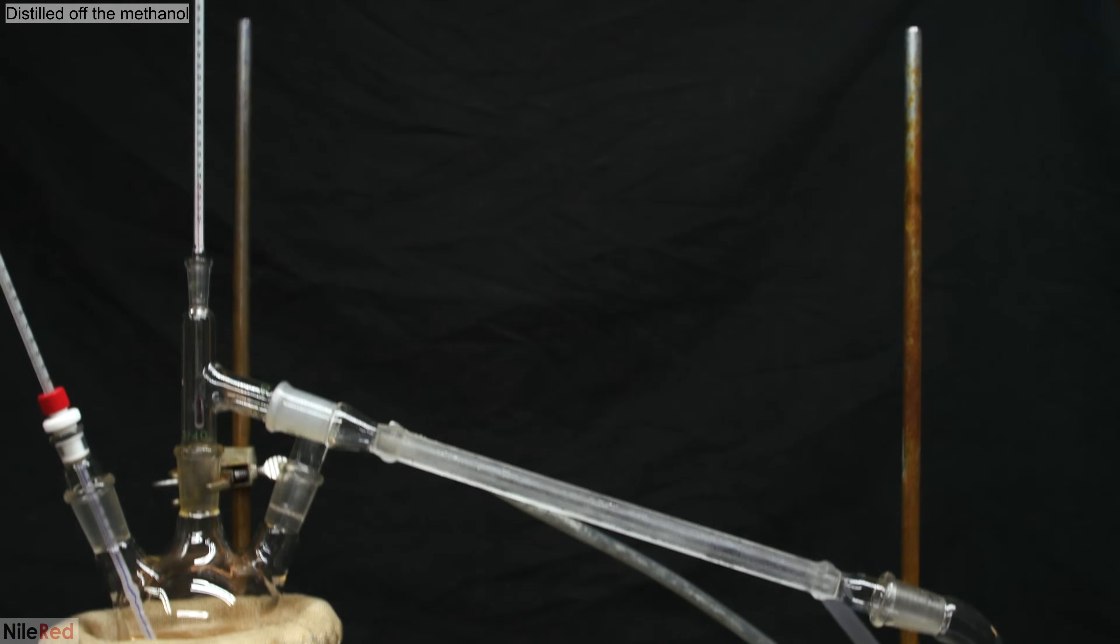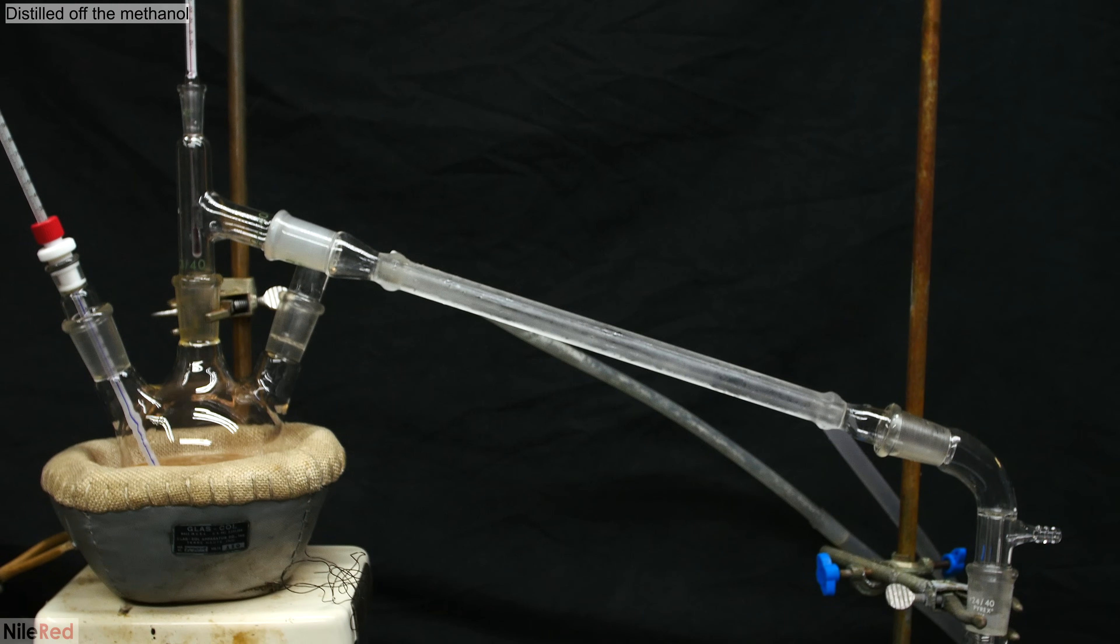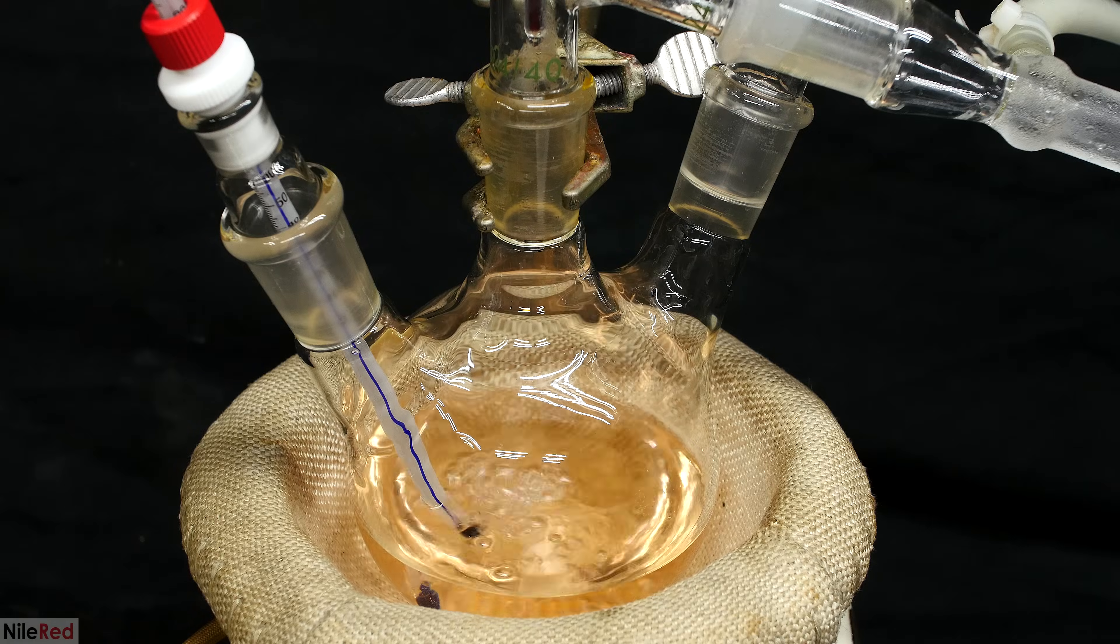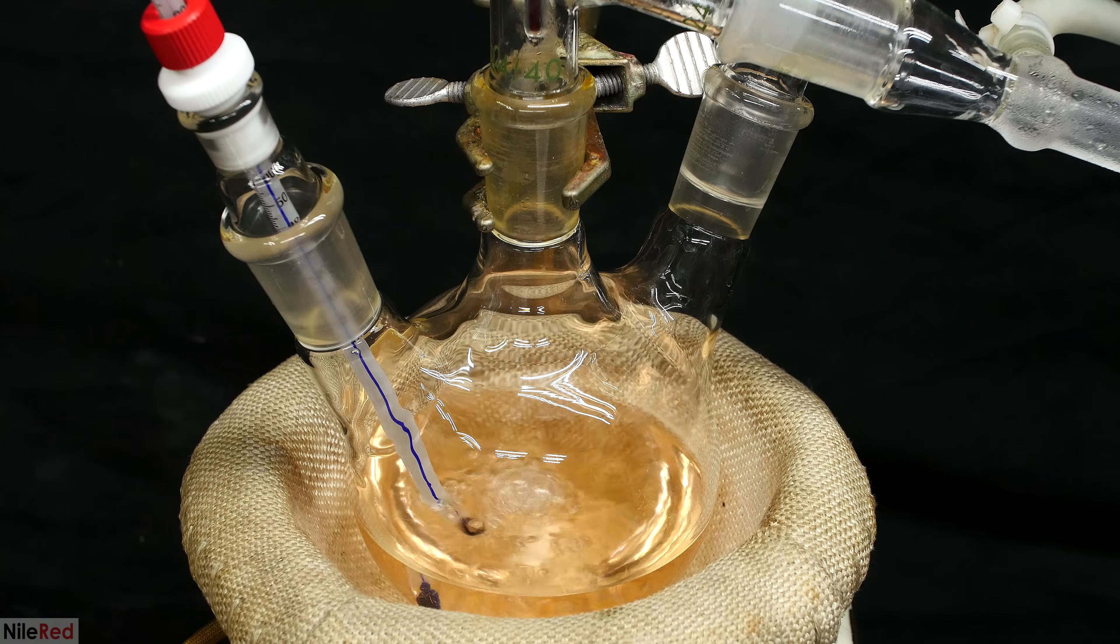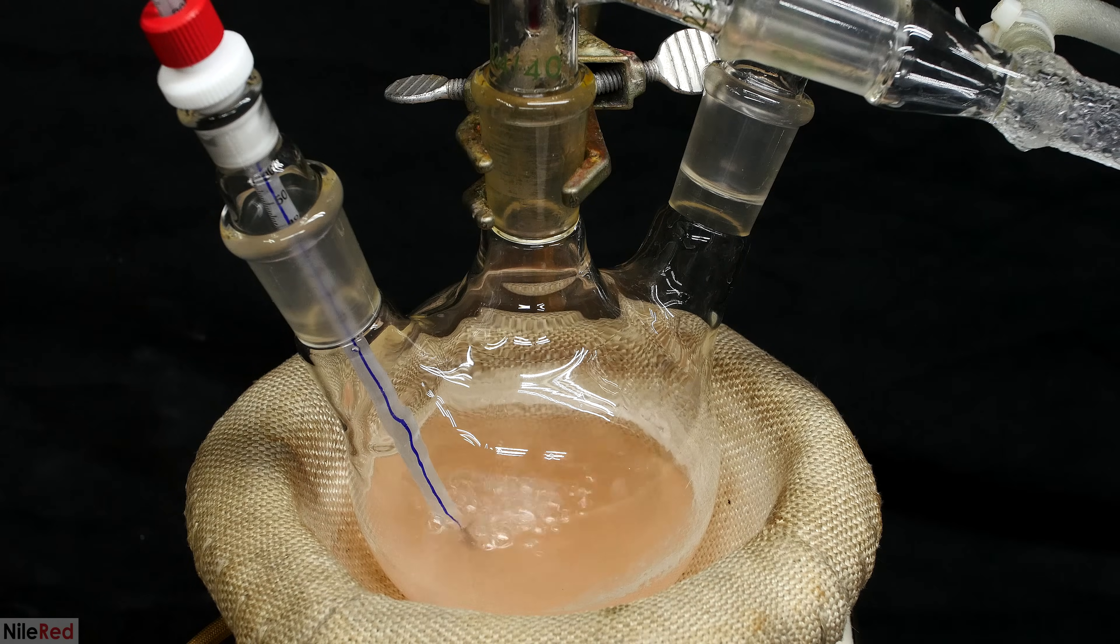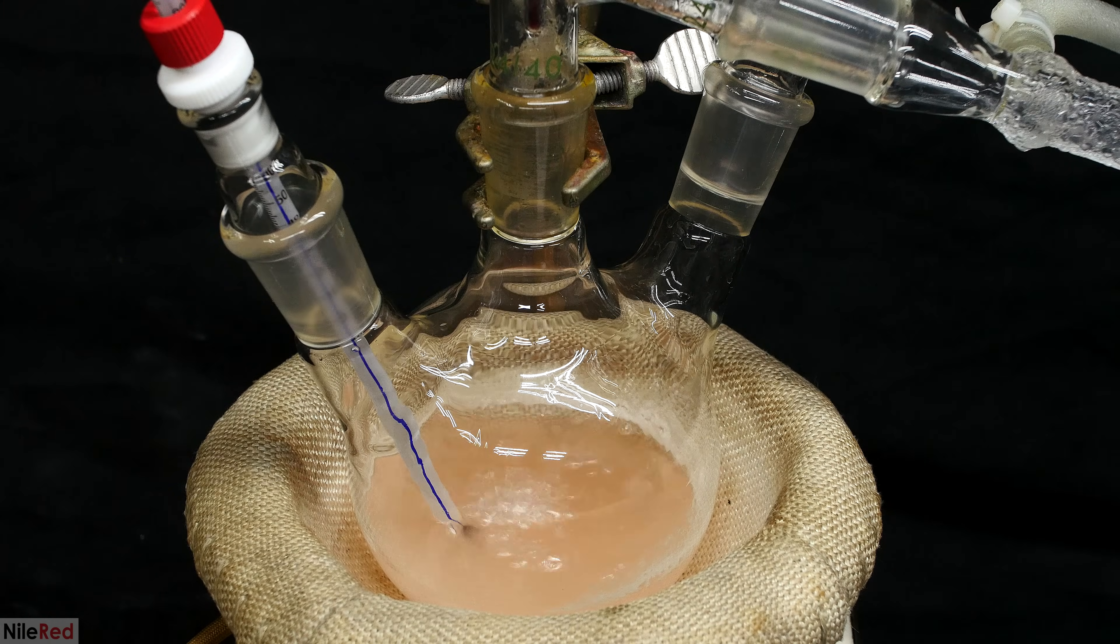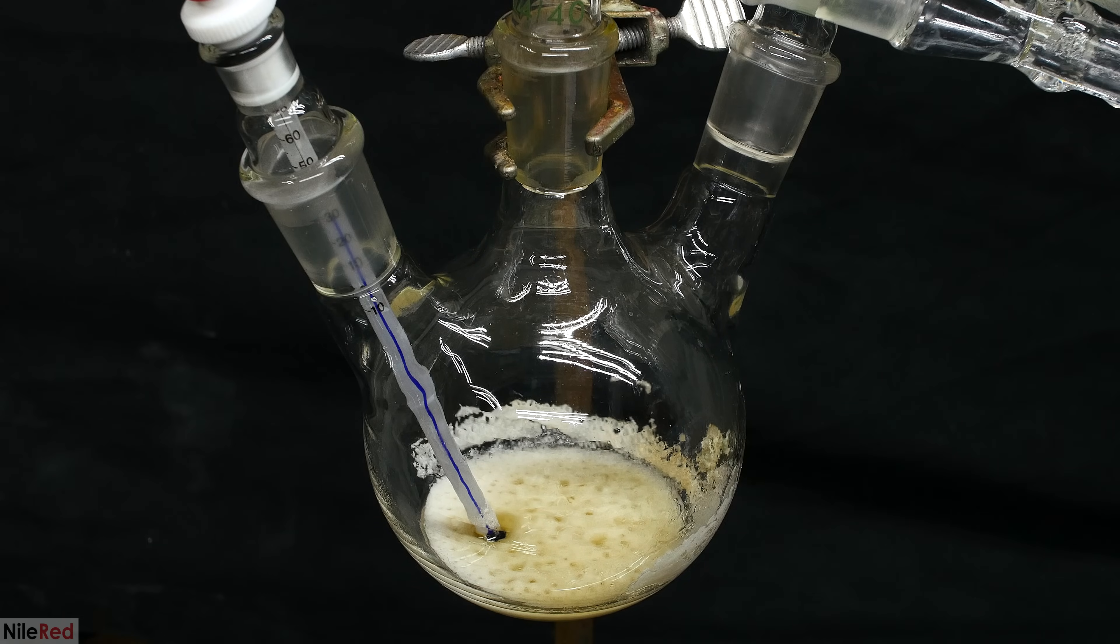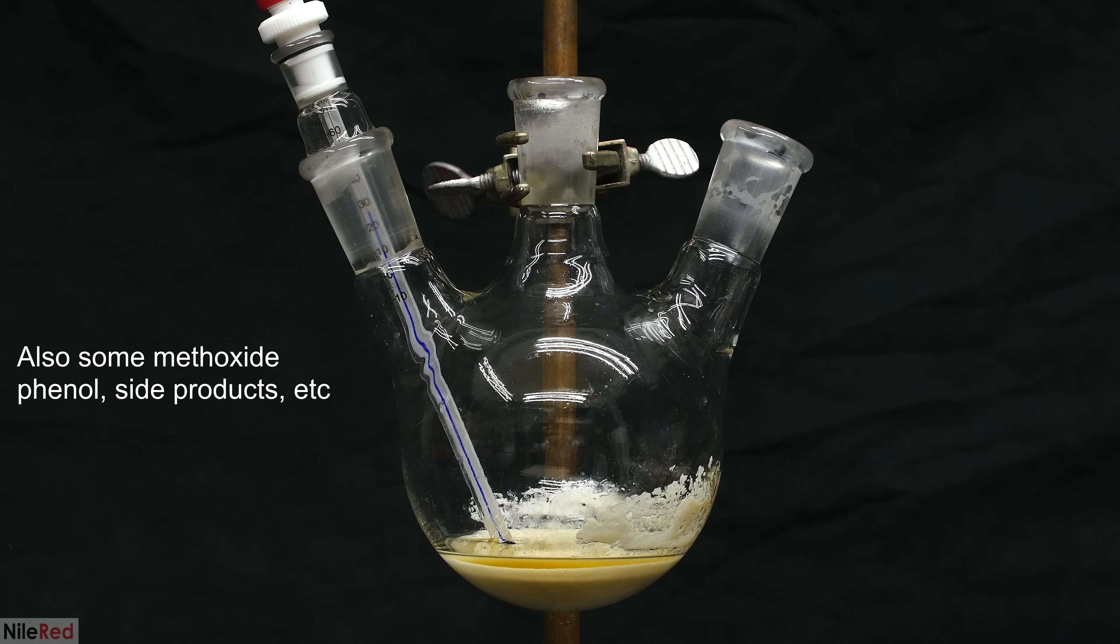Once I hit the hour and a half mark, I then set things up for a simple distillation. Our goal here is to distill off the methanol, and because we're going to be distilling to more or less dryness, it's important not to crank the heat up too much. Eventually, most of the methanol is gone, and we're left with a nice cake at the bottom of the flask. What we have left here is mostly sodium iodide salt, as well as our product anisole.